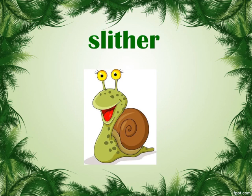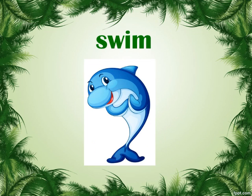Slither means that it moves along in a curving way. What is in the picture? It's a fish. And how does it move? It swims in water.